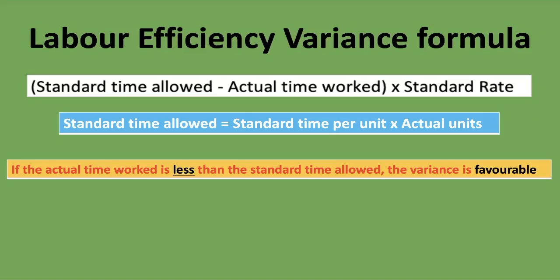A favorable variance could mean we produced our product more quickly than expected — perhaps our workers were more efficient, motivated, or we had better quality materials that enabled us to work more quickly. Another reason it could be favorable is that we may have made an error in allocating time to the jobs, for example over-allocating time when calculating the standard time allowed.